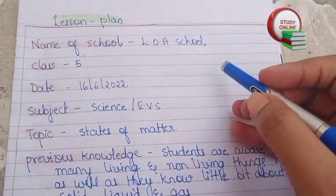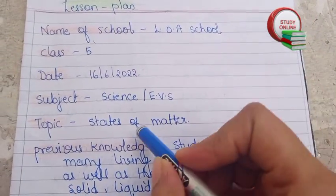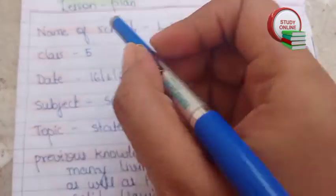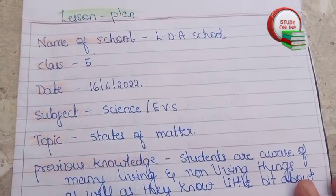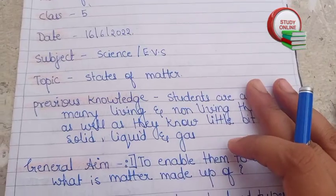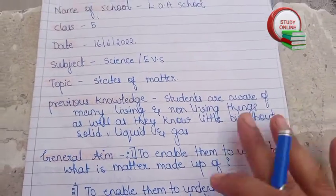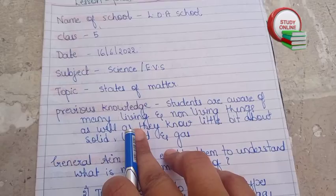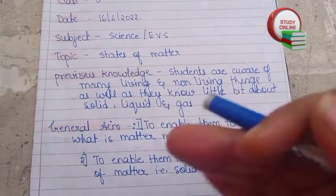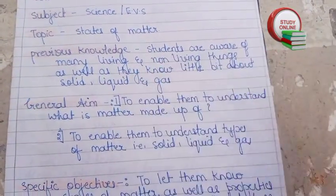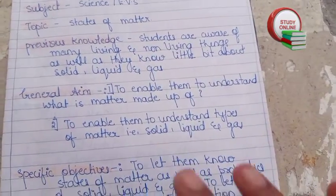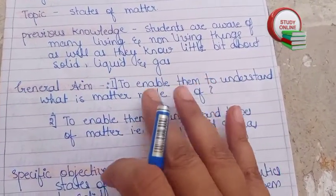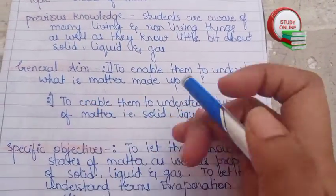Hello everyone, this is a lesson plan on the topic States of Matter for Class 5. You can see how to make this lesson plan format. For previous knowledge, students are already aware of many types of things like living things, non-living things, and they have a little bit of knowledge about solid, liquid, and gas generally.